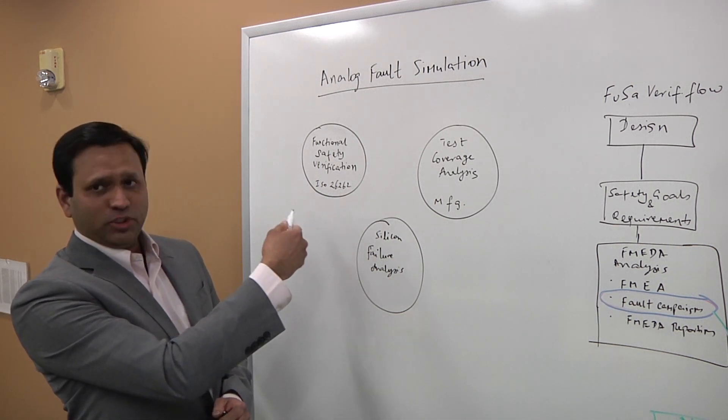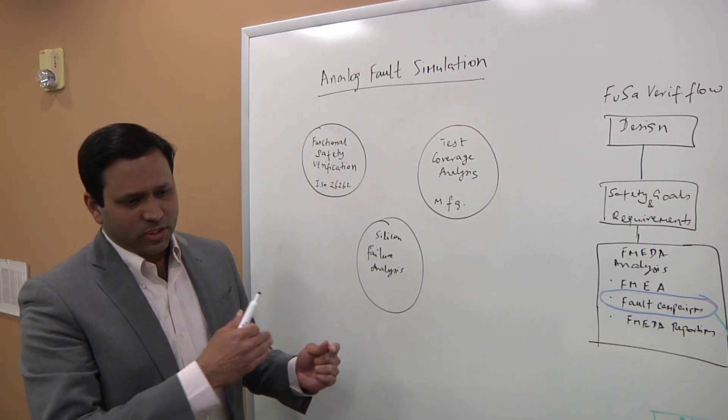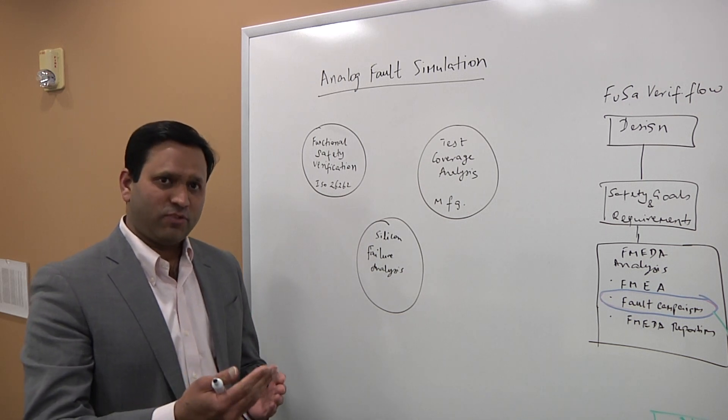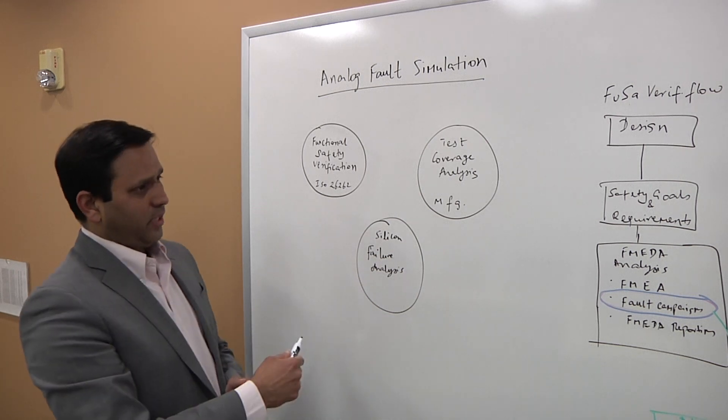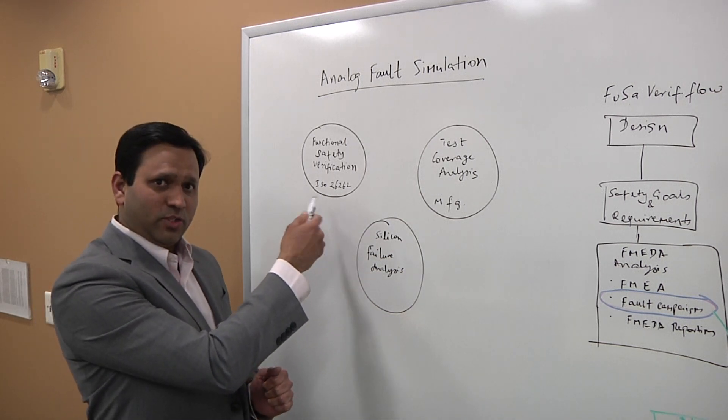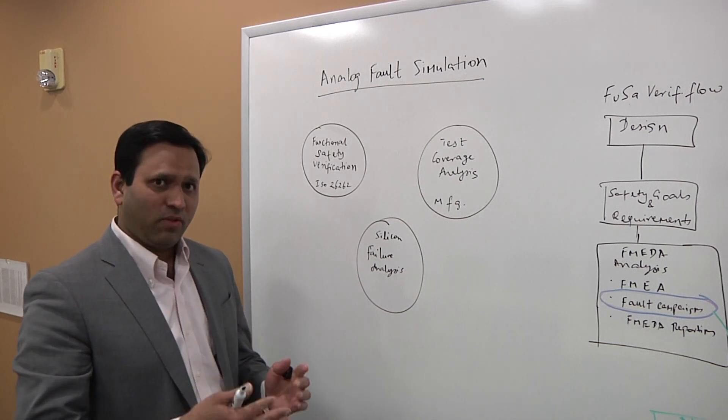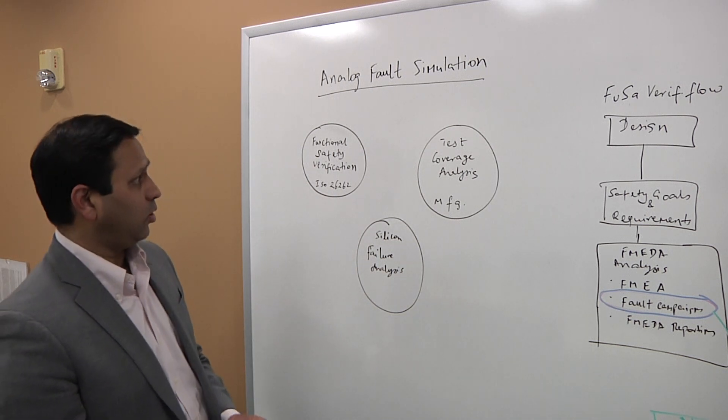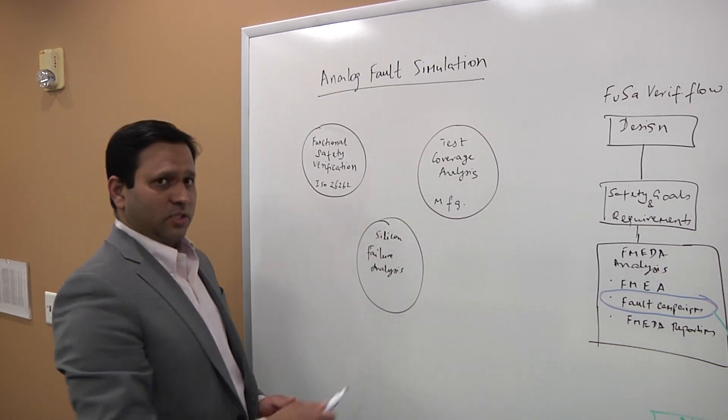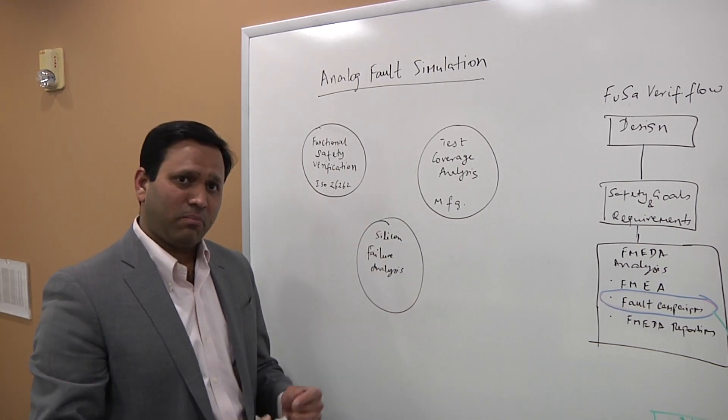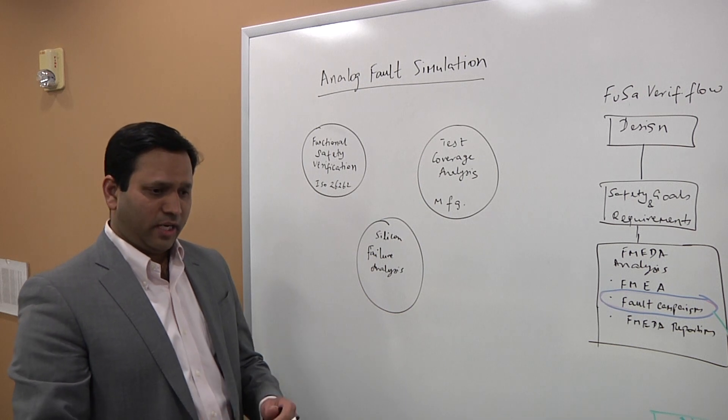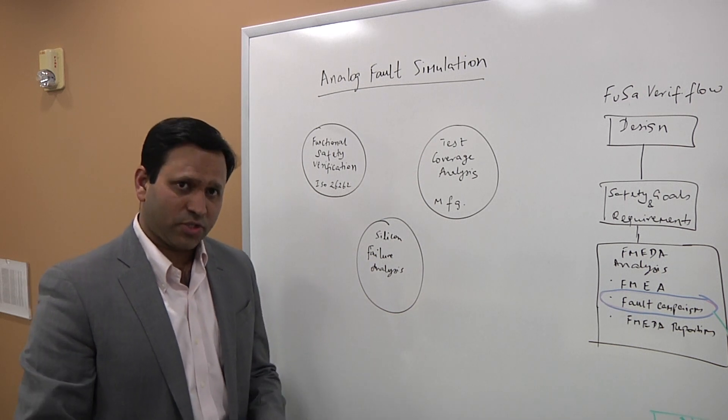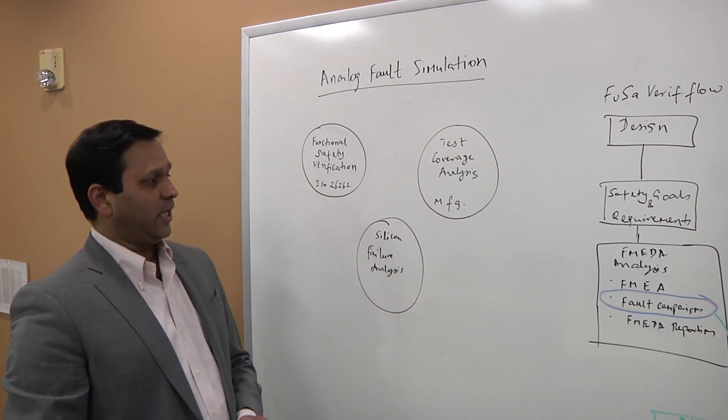The first bubble here you see is functional safety verification, and that ties in very closely to the idea of ensuring safety on automotive ICs and SOCs. That's this one. And I've written ISO 26262, which is essentially one of the key guidelines that automotive vendors need to adhere to or follow. The second bubble is the test coverage analysis bubble. That's for manufacturing. This has always been around. It's just that now more and more IC vendors are using analog fault simulation as a way to improve test coverage.